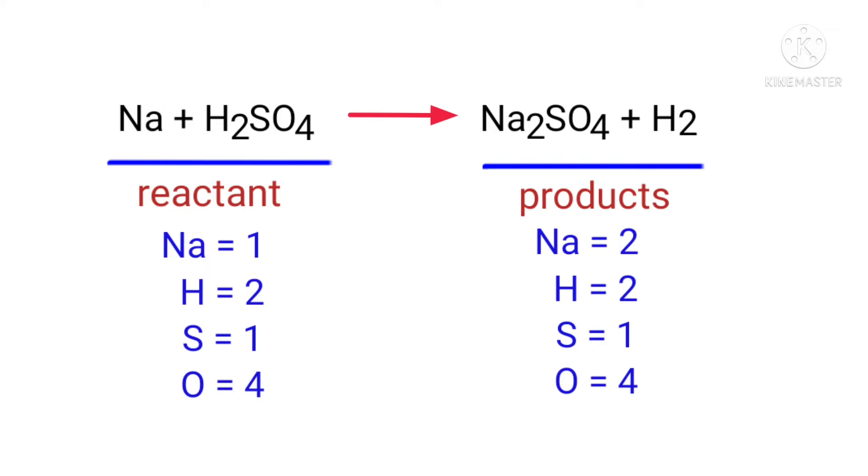In the reactants side, there are one sodium atom, two hydrogen atoms, one sulfur atom and four oxygen atoms. On the products side, there are two sodium atoms, two hydrogen atoms, one sulfur atom and four oxygen atoms. The number of atoms are not balanced on both sides.